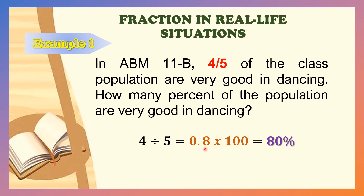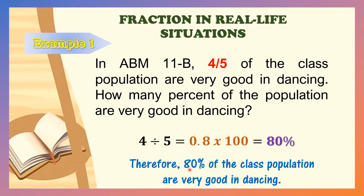We are going to multiply the decimal number by 100. So 0.8 times 100 is equal to 80. Then we add the percent sign for it to become a percentage. Therefore, 80% of the class population are very good in dancing.